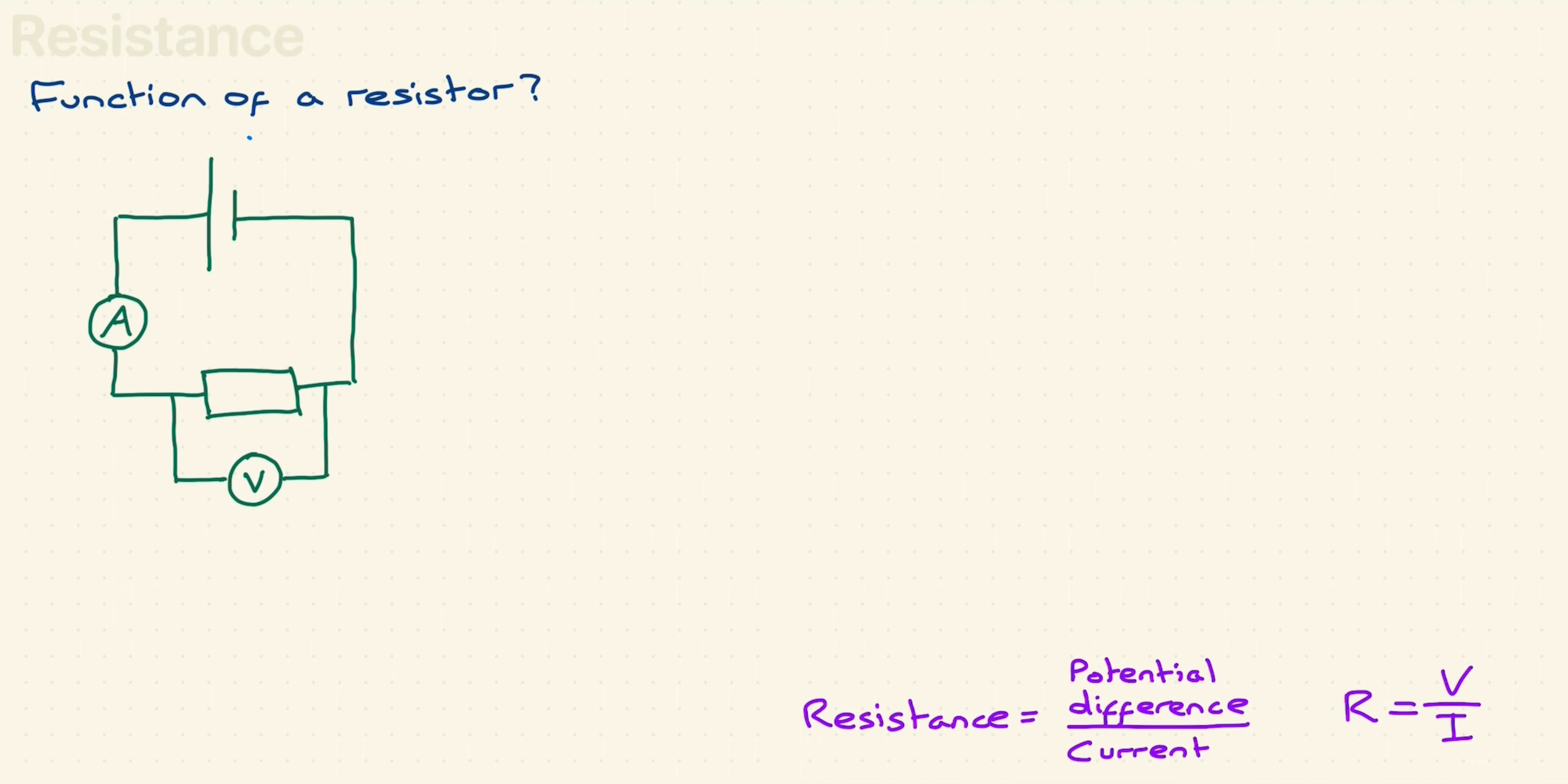If the cell has an EMF of 6 volts, the resistor will have a PD of 6 volts, which is shown on the voltmeter. That's fixed. That's controlled by the cell. It has an EMF of 6 volts, and it is driving the circuit. The resistor is also fixed. It is an object in the circuit, and it has a fixed value for its resistance because that's how it was made in the factory. Let's say it has a resistance of 3 ohms.